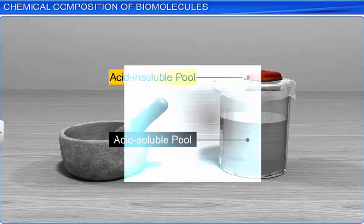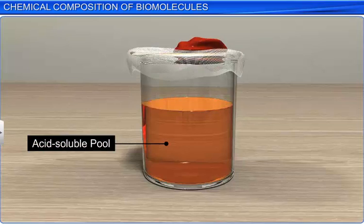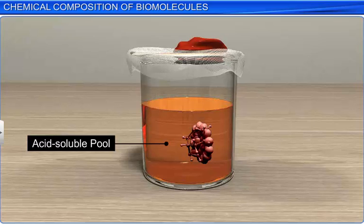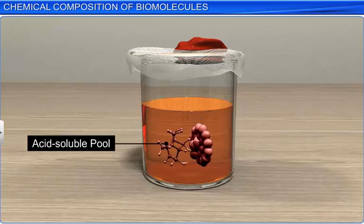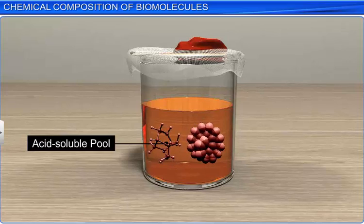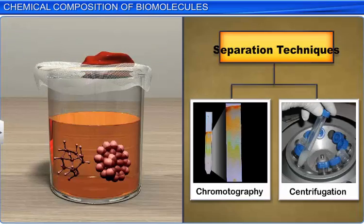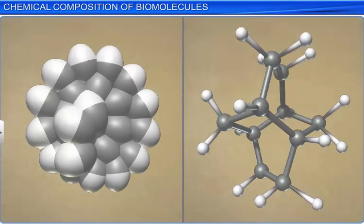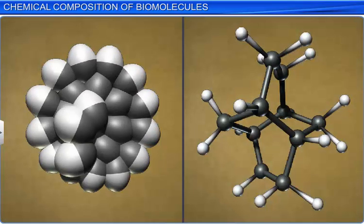The acid-soluble pool contains organic compounds. Once a compound has been extracted, the next stage is to separate one compound from the others using separation techniques such as chromatography and centrifugation. Thereafter, various analytical techniques are used to identify the molecular formula and the structure of the compound.